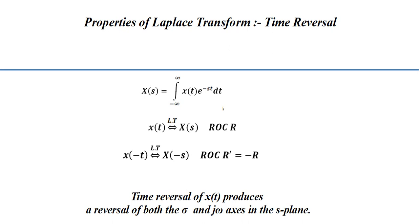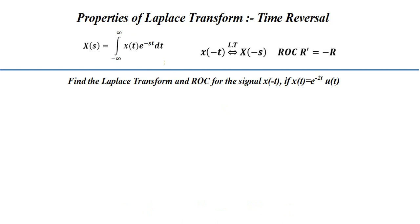In the first example, we need to find the Laplace transform and ROC of the signal X(-t), where X(t) is given by e raised to minus 2t multiplied by u(t). We can approach this problem either by direct formula or by using the time reversal property. The given X(t) = e^(-2t) u(t) is in standard form.